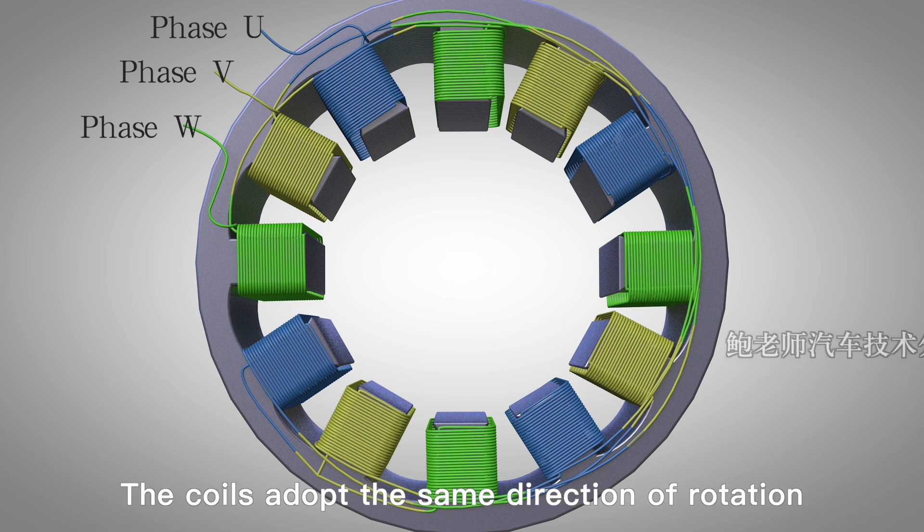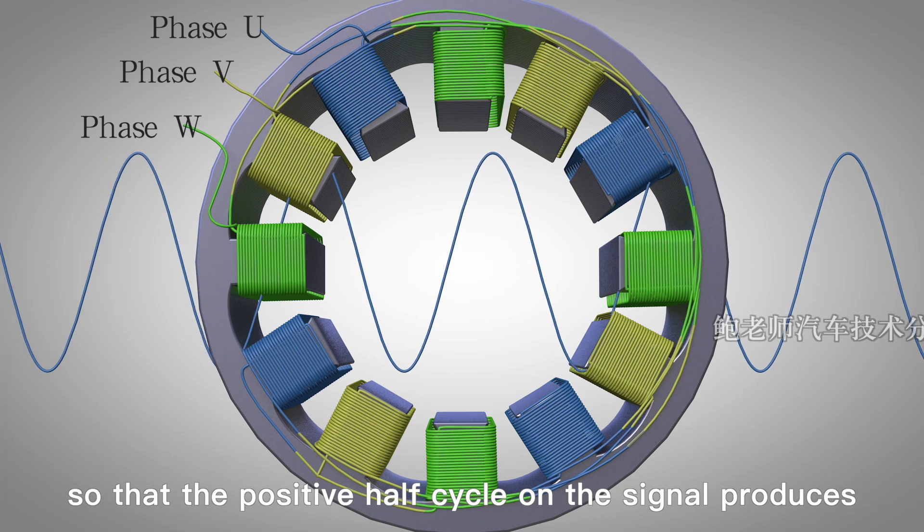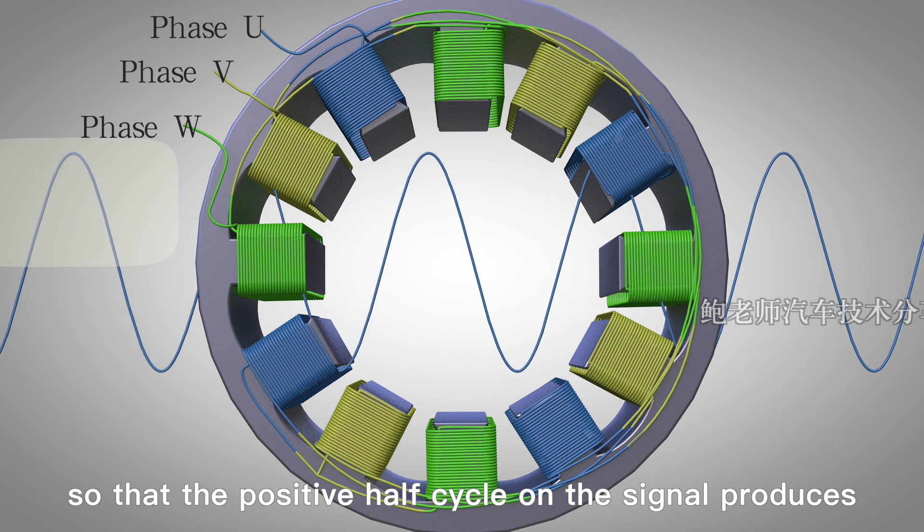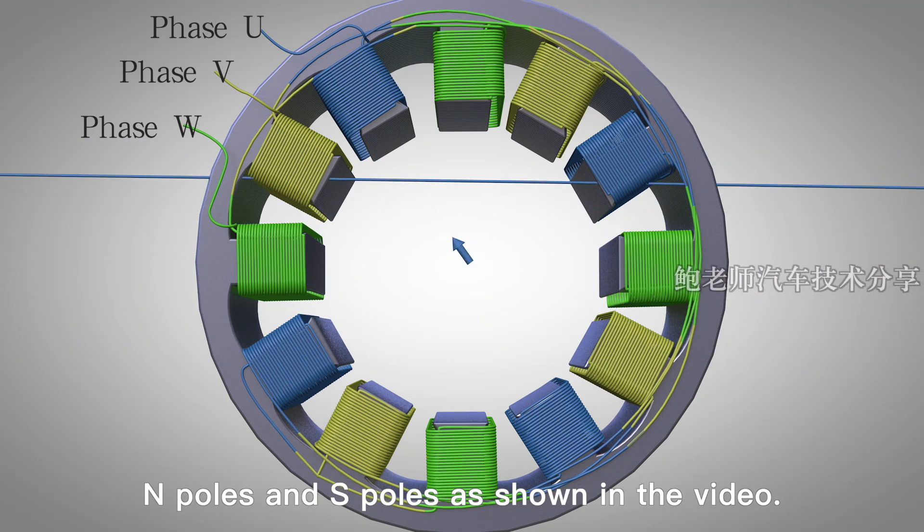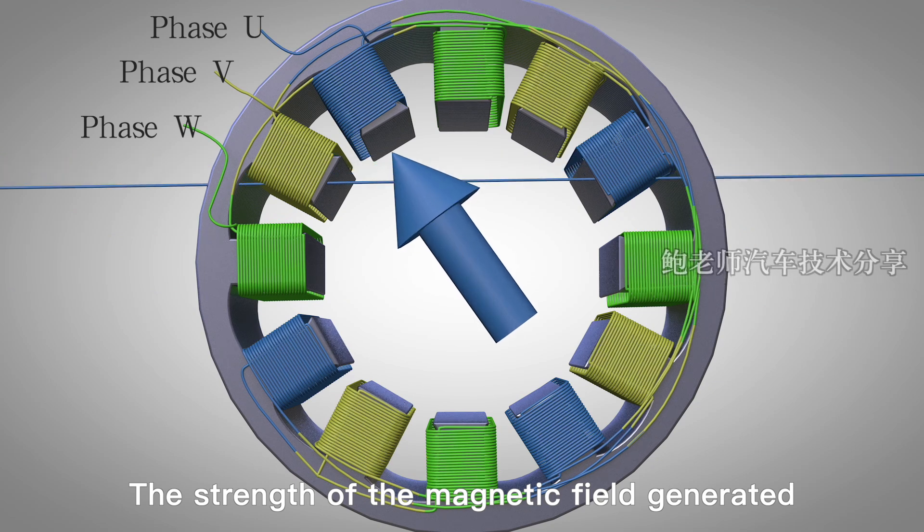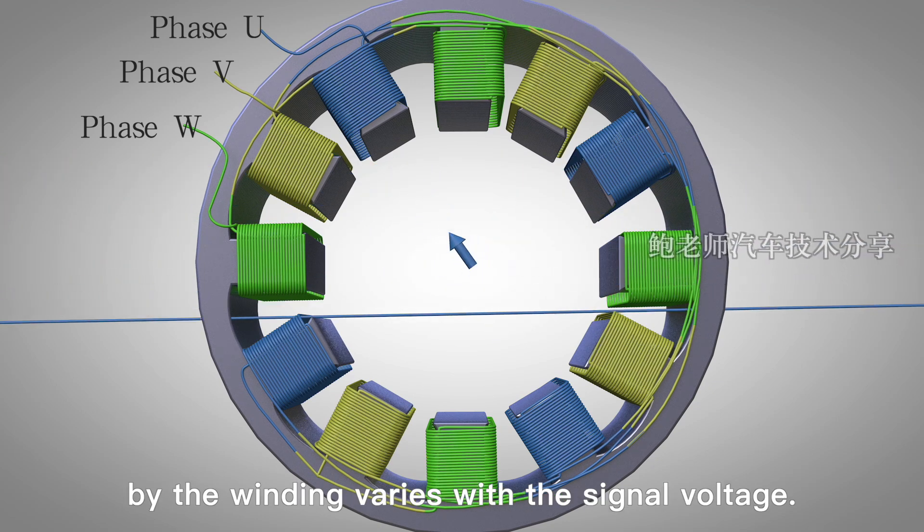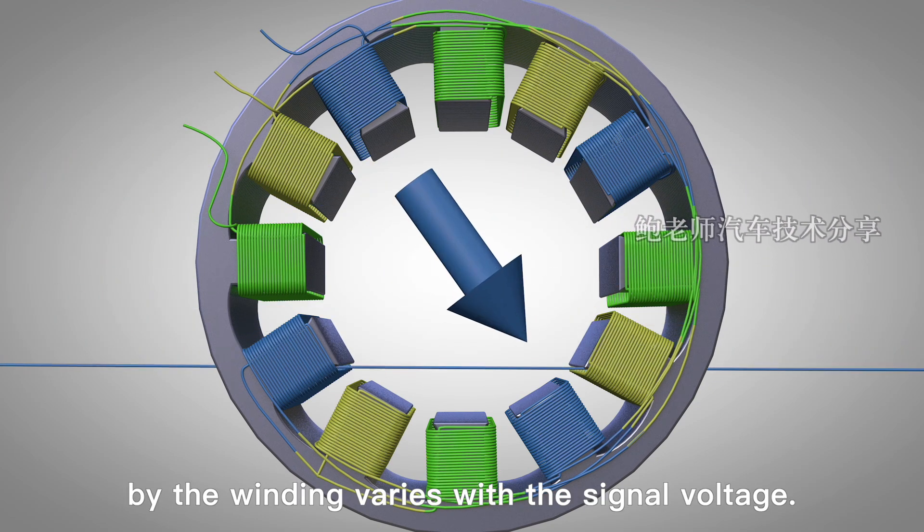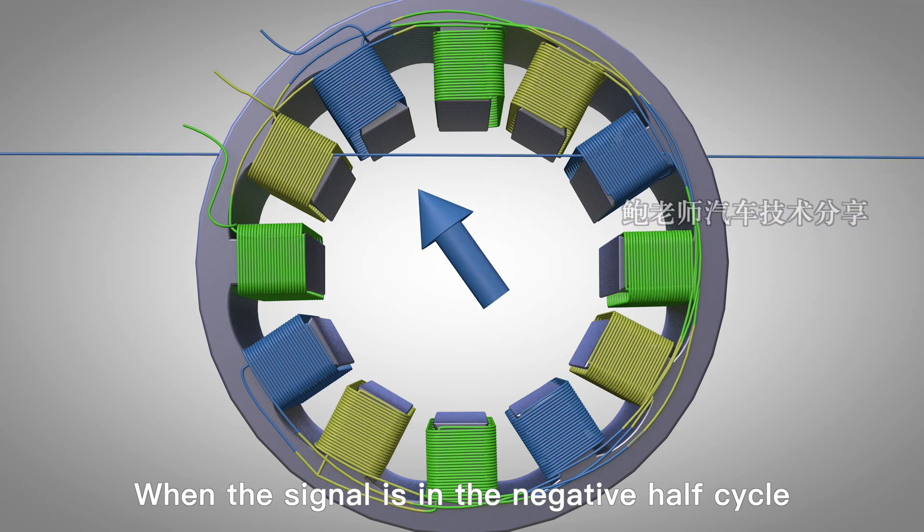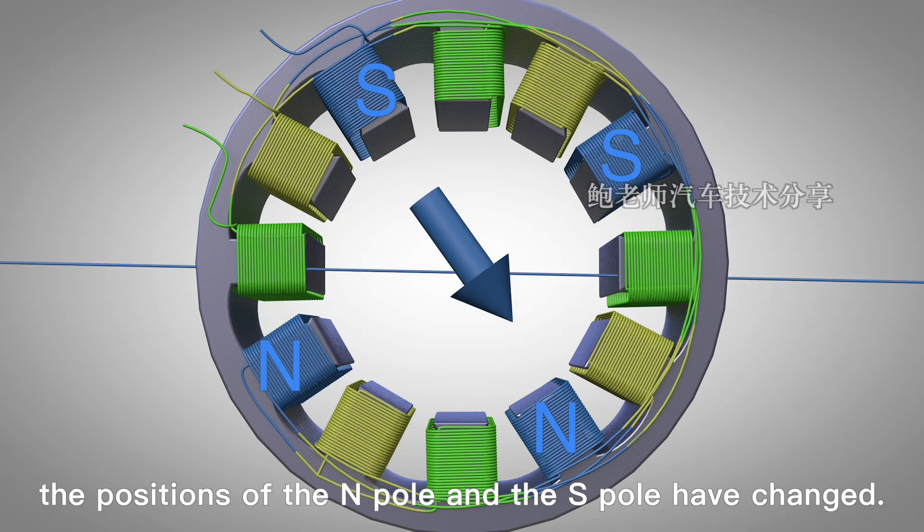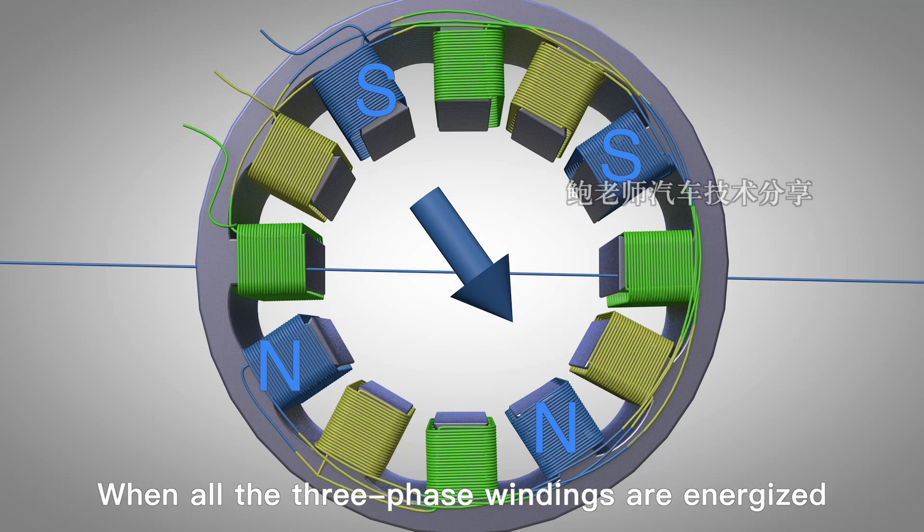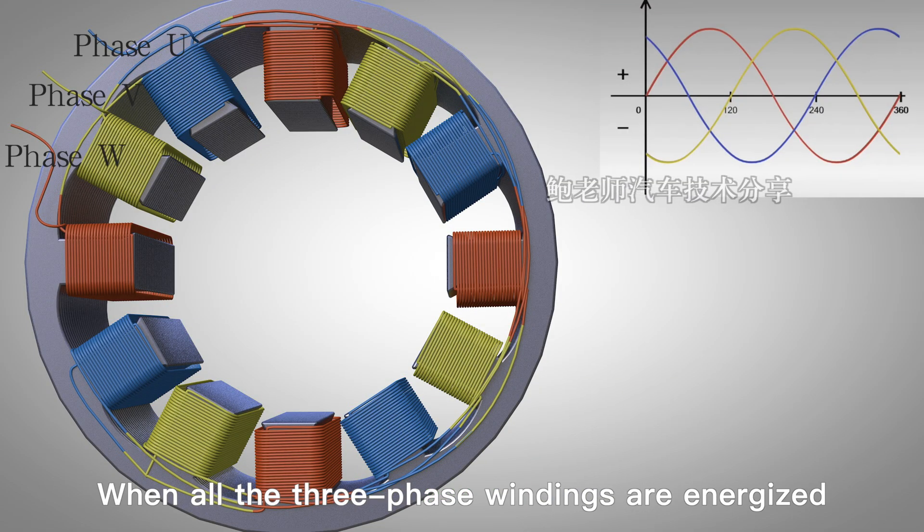The coils adopt the same direction of winding, so that the positive half cycle of the signal produces N poles and S poles as shown in the video. The strength of the magnetic field generated by the winding varies with the signal voltage. When the signal is in the negative half cycle, the positions of the N pole and S pole are reversed. When all three-phase windings are energized,